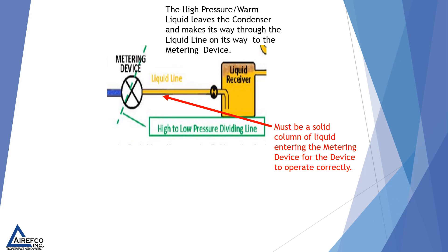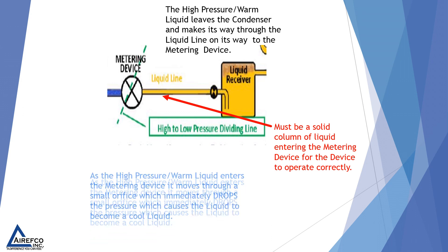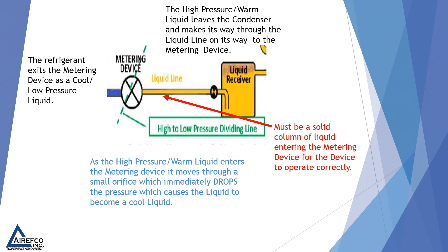The metering device is the dividing line between high and low pressure. As the high-pressure, warm liquid enters the metering device, it moves through a small orifice which immediately drops the pressure, which causes the liquid to become a cool liquid. The refrigerant exits the metering device as a cool, low-pressure liquid.